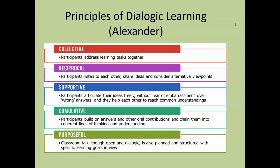The five principles of dialogic learning are very simple. Everybody works together, including the teacher. Everybody listens to each other, shares their ideas, and is willing to consider everybody else's viewpoint. Everybody is supportive — so everybody is able to say what they want without feeling embarrassed; there are no wrong answers. There's a general aim to come to common understanding and a common way forward. It's cumulative — things build on each other — and it's purposeful. The only role the teacher plays is keeping it focused on whatever the class is about.